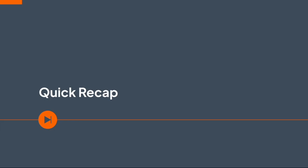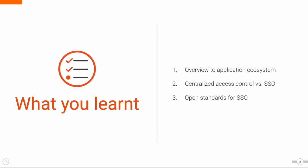We have now come to the end of this training video. Let's have a quick recap of what we learnt. First, we got to know how a typical application ecosystem functions. Next, we learnt the benefits of using single sign-on as opposed to a centralized access control system. And finally, we got to know the open standards that are used to implement single sign-on.